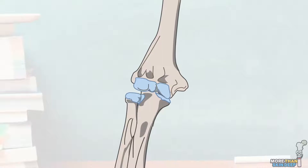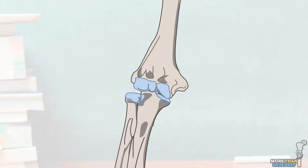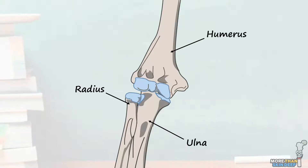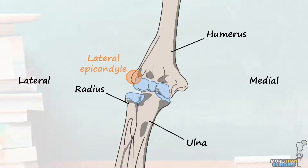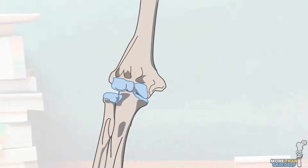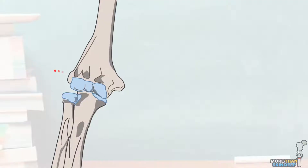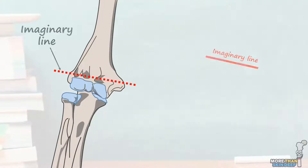Let's start by getting ourselves oriented. Here we're looking at the right arm. This large bone here is the humerus, here is the ulna, and here is the radius. We're looking at all these structures from the anterior aspect, where this is lateral and this is medial. These two bony protuberances are known as the humeral epicondyles. The first border of the cubital fossa is simply an imaginary line drawn horizontally between the two epicondyles of the humerus, marking the superior extent of the cubital fossa.